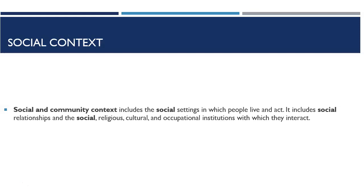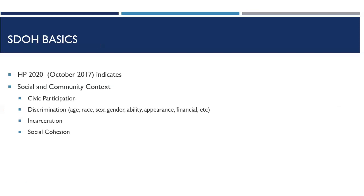When you think about everything you've heard so far about social determinants of health in unit 2, you should start to see that those first three determinants — education, economic stability, and environment — are different in different groups of people, and that difference is going to affect social context. According to Healthy People 2020, in October 2017, social and community context is made up of four elements: civic participation, discrimination, incarceration, and social cohesion. Experiences with these four items help determine whether social and community context is strong or weak.